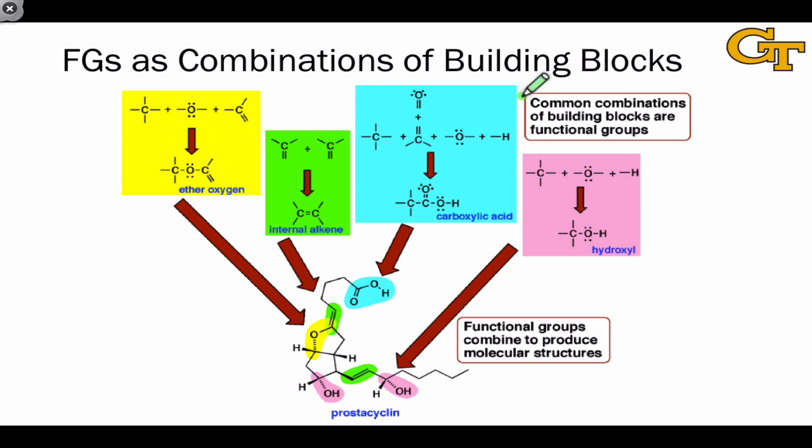Functional groups amount to common combinations of the building blocks, and we've explored this a little bit already in the context of the carboxylic acid. We combine the building blocks, which are atomic fragments, to create molecular fragments that are functional groups. These molecular fragments are latched onto a carbon skeleton to create organic structures. And the atoms of the skeleton are most commonly just sp3-hybridized carbons connected into acyclic or even cyclic structures.